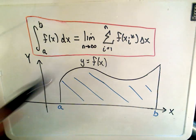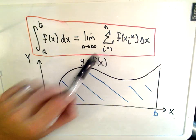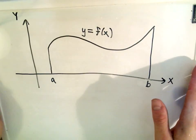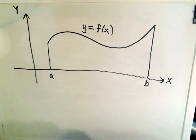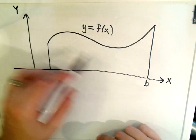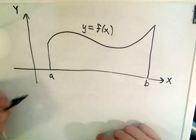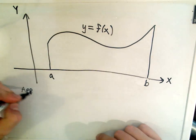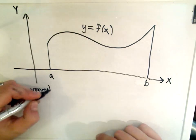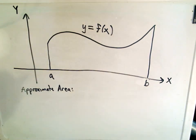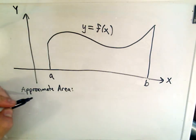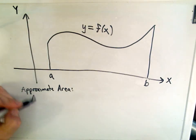So let's talk about where this definition on the right-hand side comes from. Here's my graph of f of x between a and b. What we're first going to do is, instead of actually calculating the area directly, we're going to approximate the area. This is the whole basic idea with integration in general — you do an approximation that's easy to do, and you use that approximation to eventually come up with the actual value.